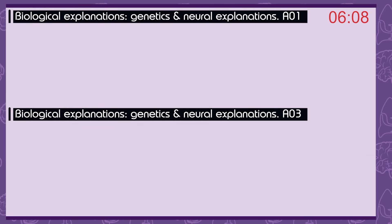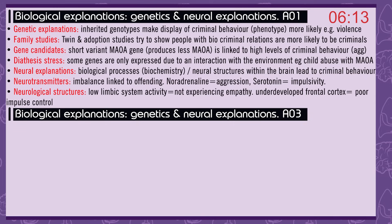Biological explanations — genetic and neural. Genetic explanations: inherited genotypes make the display of criminal behaviour (the phenotype) more likely, for example violence. Family studies: twin and adoption studies try to show people with biological criminal relations are more likely to be criminals themselves. Gene candidates: the short variant MAOA gene produces less MAOA and is linked to high levels of criminal behaviour, including aggression. Diathesis-stress: some genes are only expressed due to an interaction with the environment, for example child abuse with MAOA.